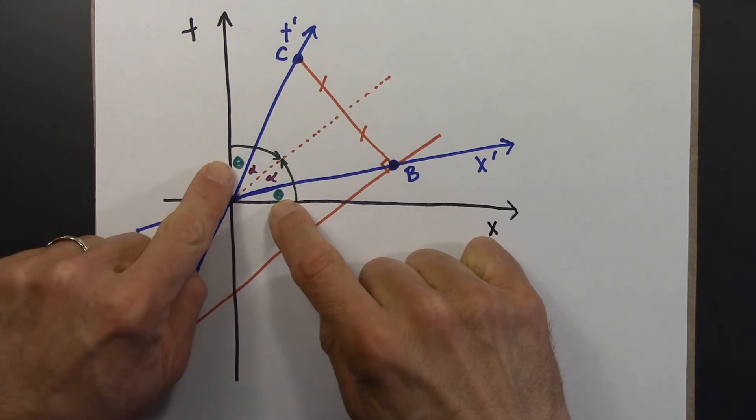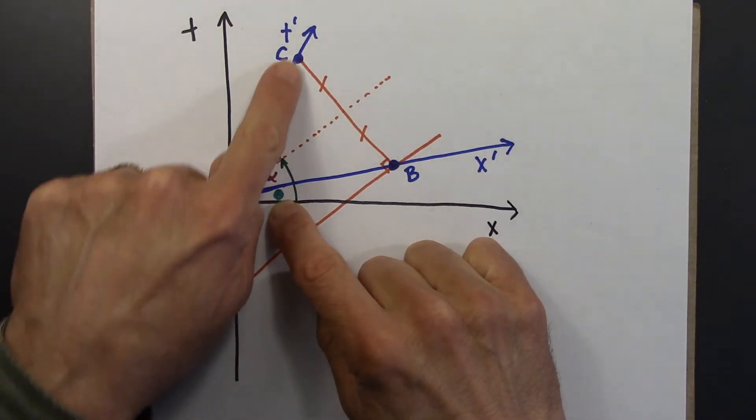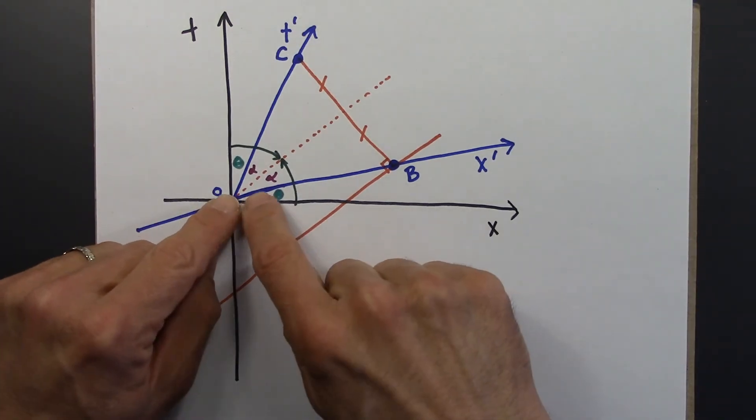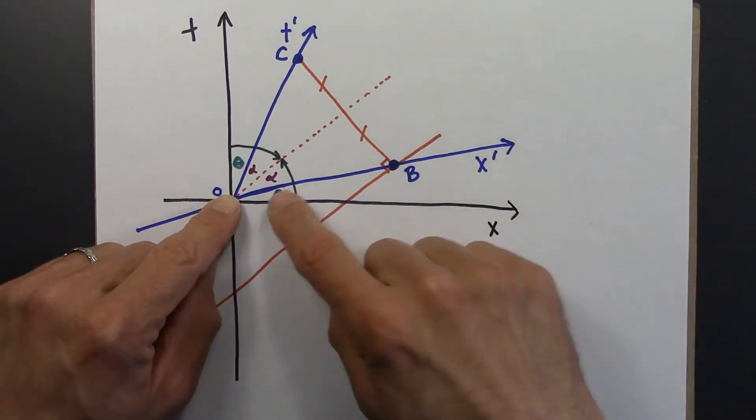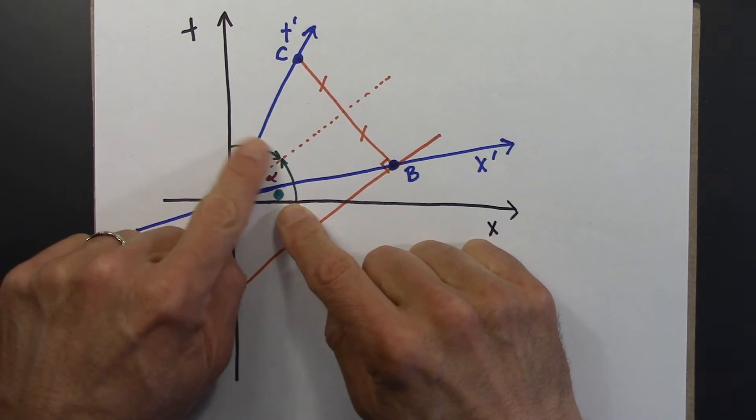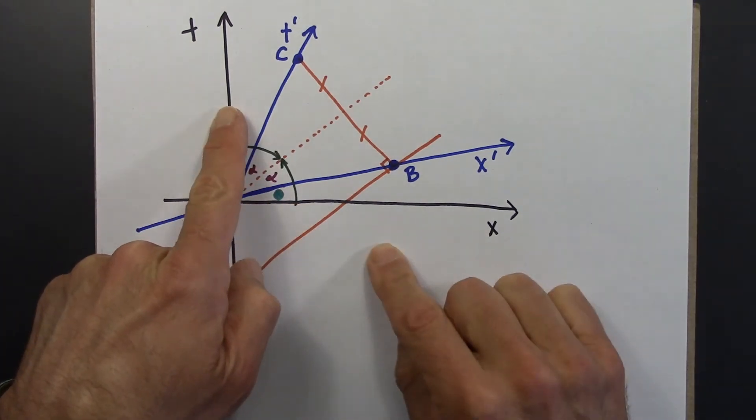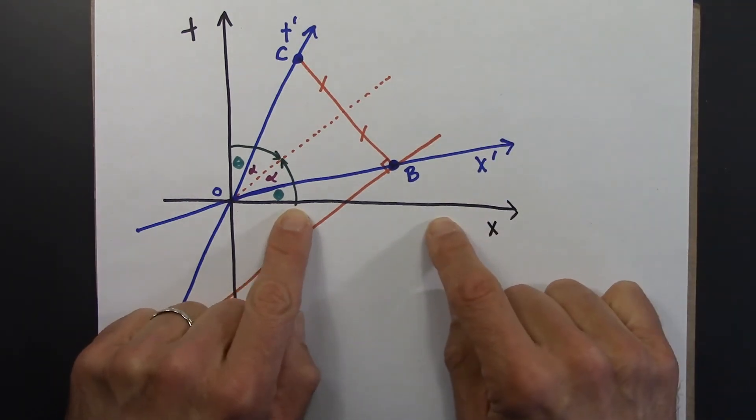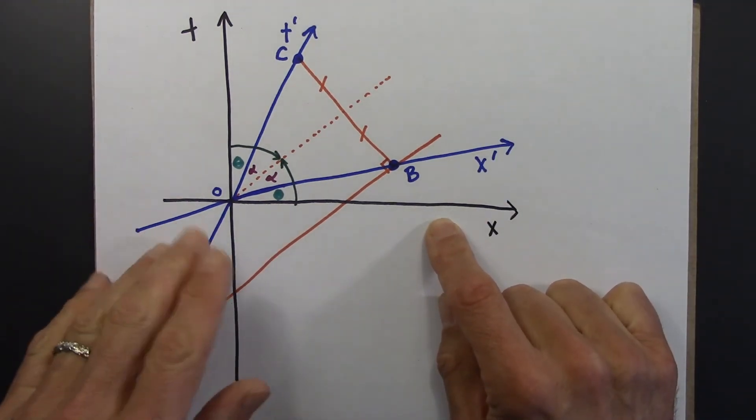So what that means is, remember this had a slope of 1 over beta. Then that means this is going to have a slope of beta. Their slopes are reciprocal. The angle that this makes with respect to the t-axis is the same thing that the angle that x' makes with respect to the x-axis. So that's result number one.